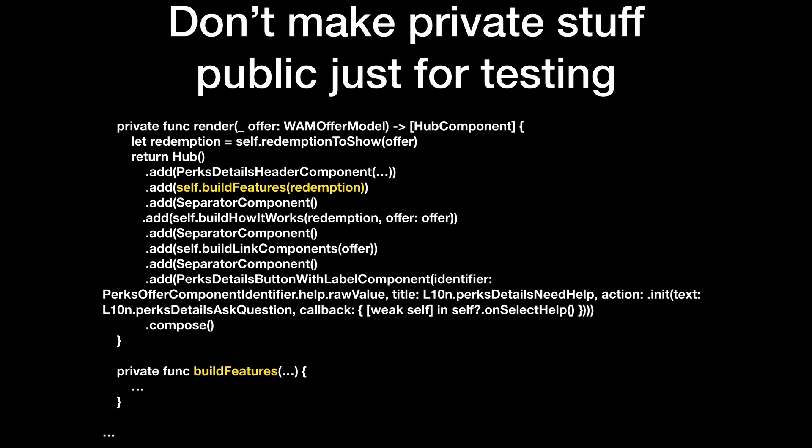Let's see what problems we have with the current way we test. One important thing for me is that we don't make things public just because they're implementation details we want to test. For example, here is a screen from our perks section where we split things into a separate private function for readability. There's a tendency to make this public just for testing, but that misses the picture — we actually care about making sure the screen gives us the components we want, not that a specific private part is correct.